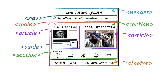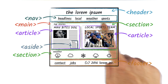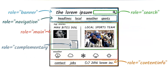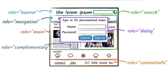Speaking of implicit semantics, we mentioned earlier that HTML landmark elements may be used to help assistive technology users find their way around the page. ARIA also offers a set of landmark and document structure roles. Many of these are redundant with HTML5 semantic elements, but depending on what browser versions you need to support, it may be necessary in some cases to use both an HTML5 semantic element and a redundant ARIA role.